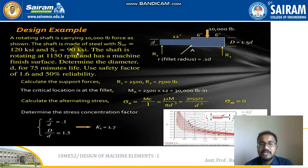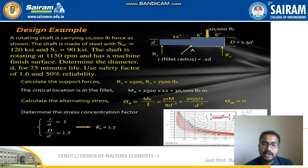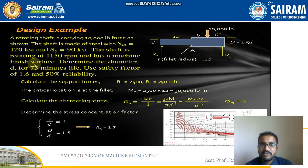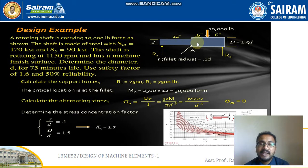We will keep this value in Newton per m² and you can convert it into the required unit that is comfortable for you. The shaft is rotating at 1150 RPM and has a machine finished surface. The machine finished surface refers to the modification factor concept, which is indirectly given in this problem.